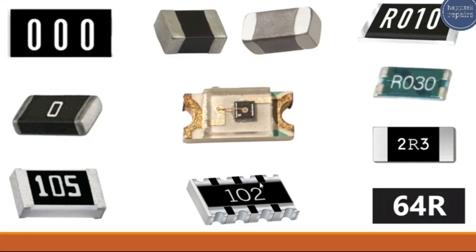This is a network resistor. A network resistor is a combination of many resistors — you can see the first resistor, the second, and the third. Its value is 1000 ohms, or one kilo-ohm, because we have the first digit, the second digit, and the third digit represents the number of zeros.